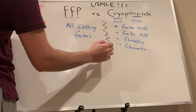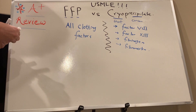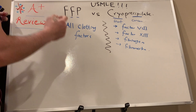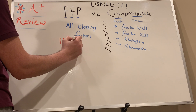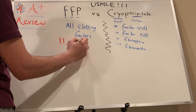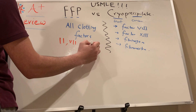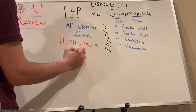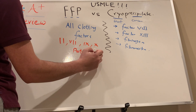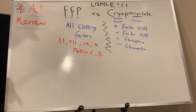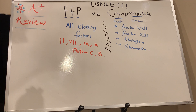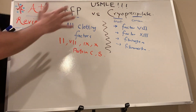For exam purposes, the key clotting factors to know are factors 2, 7, 9, and 10, along with proteins C and S. These are related to warfarin, which affects exactly those factors.